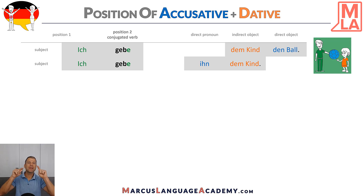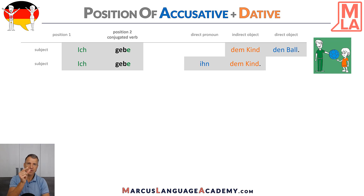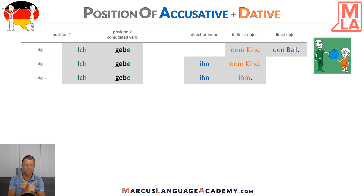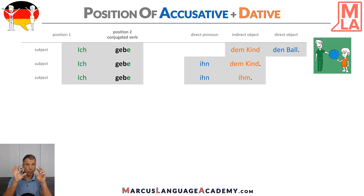Now the big question is: what happens if we also use a pronoun for 'Kind'? You would normally think it goes back to the same structure — no. It will go like this: 'Ich gebe ihn ihm.' So when we use pronouns for both words, first comes accusative and then dative — that's also a rule, we cannot switch. So remember: when we use two pronouns, accusative comes first; when we have nouns, dative comes first; and when we have one pronoun, the pronoun always goes first.